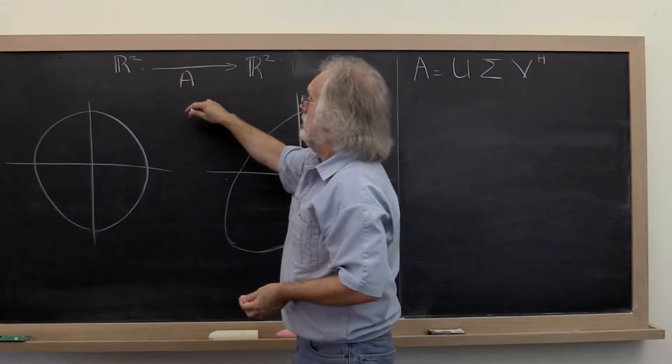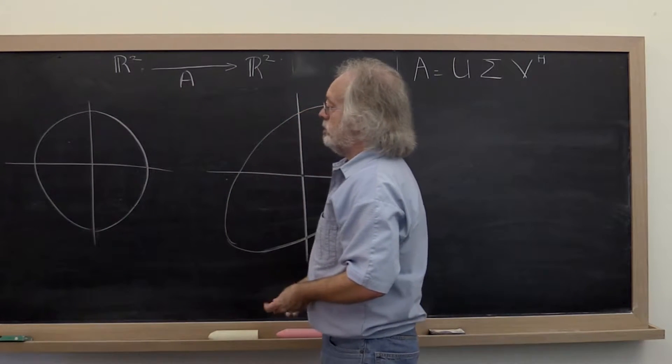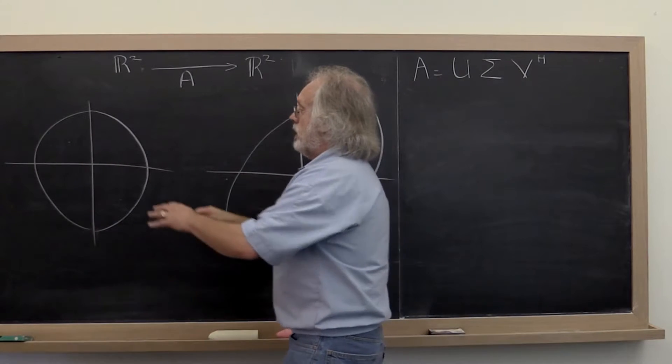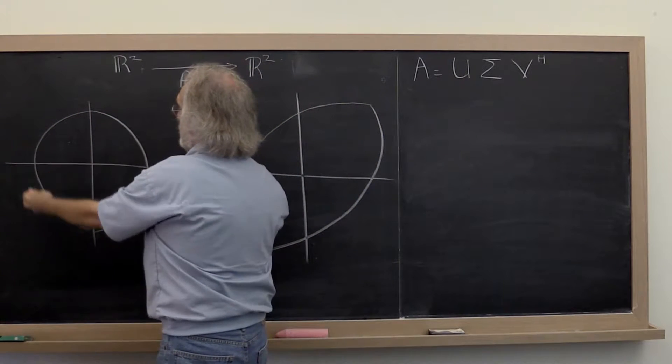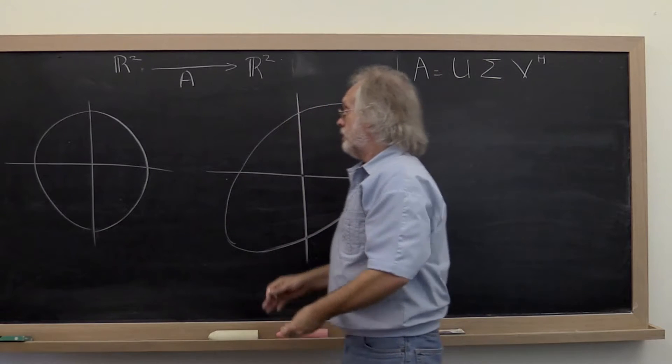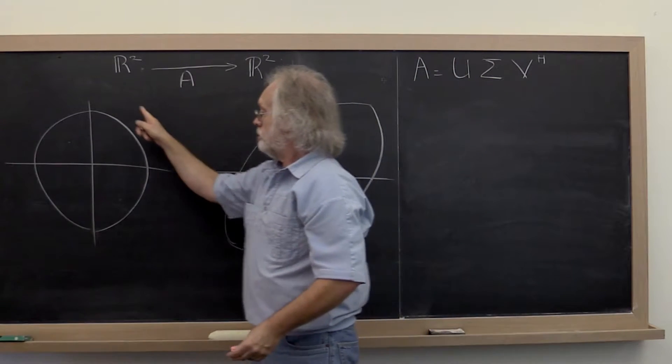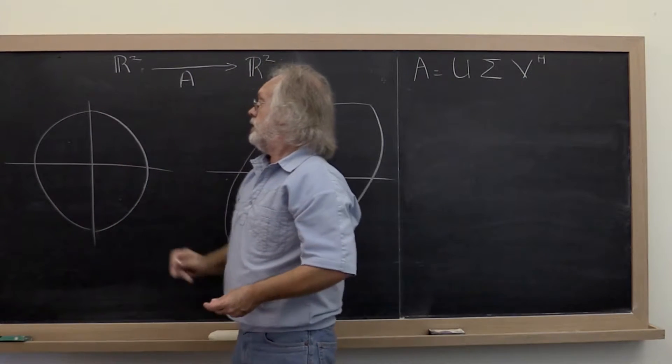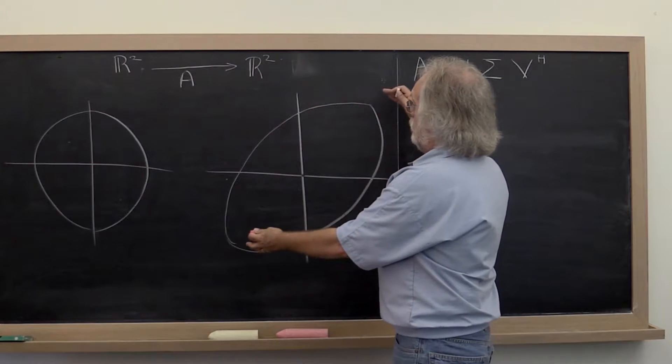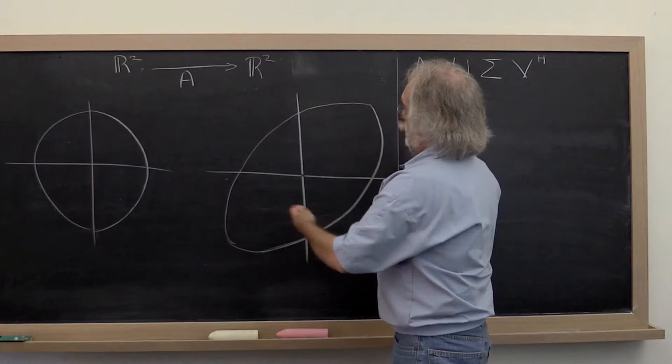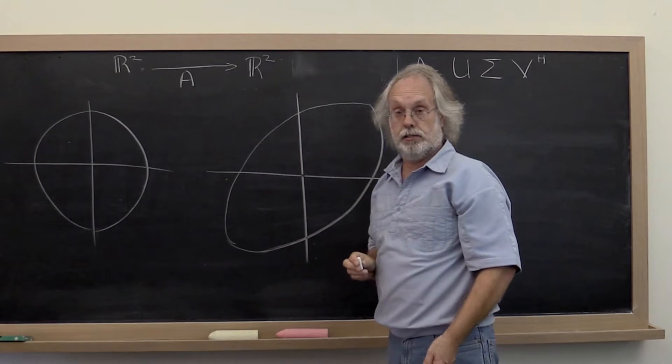How A transforms vectors can be completely described by looking at how vectors of unit length are transformed. And typically, if you look at the image of the unit ball, it looks elongated like this.